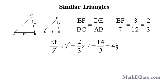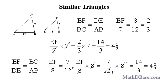A number of other proportions are also true, including the ratio of the length of side EF to the length of side DE equal to the ratio of the length of side BC to the length of side AB. Substituting the values, we can solve for the length of side EF to get 4 and 2 thirds as before.